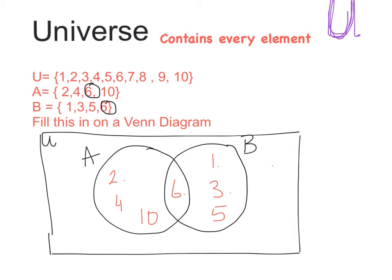Now, I must have all of these elements here within my universe. So if I go through them, I can check and see which ones do I not have. So 1, I have here. 2, I have in A. 3, I have in B. 4, I have in A. 5, I have in B. 6, I have in both A and B, the intersection.